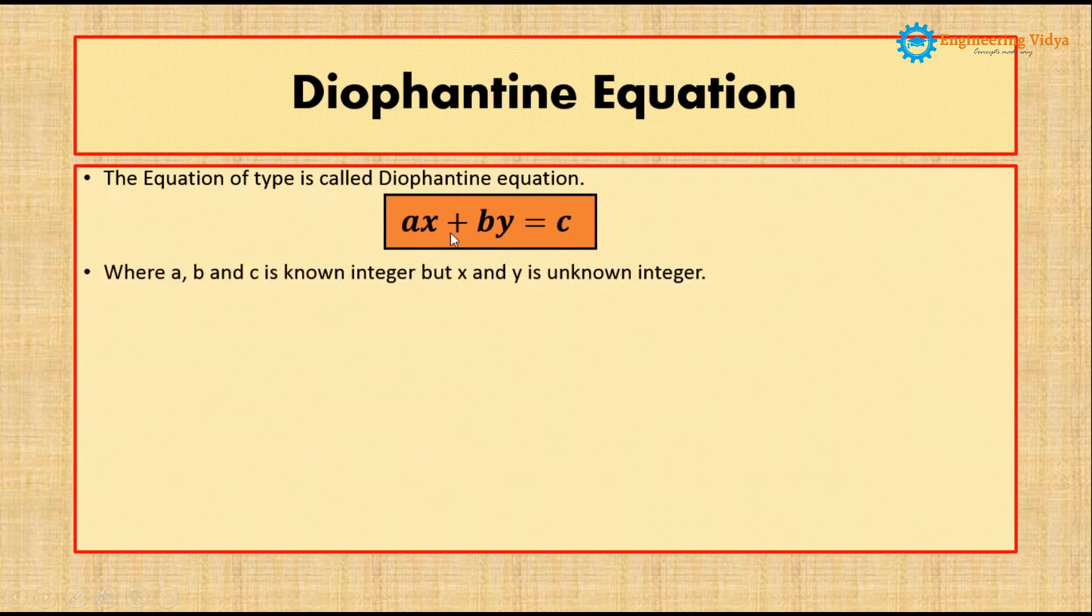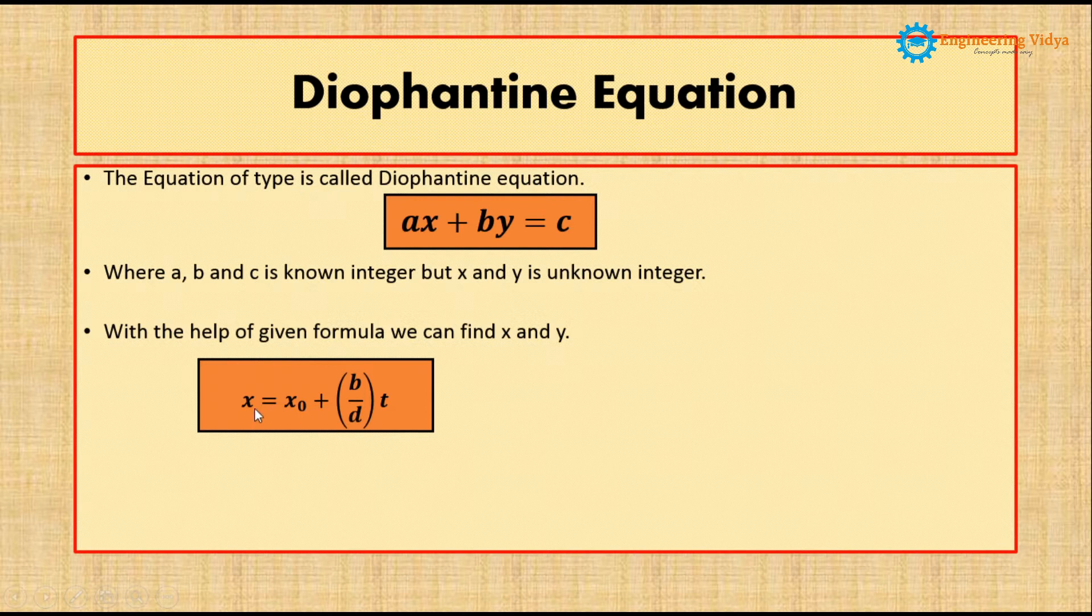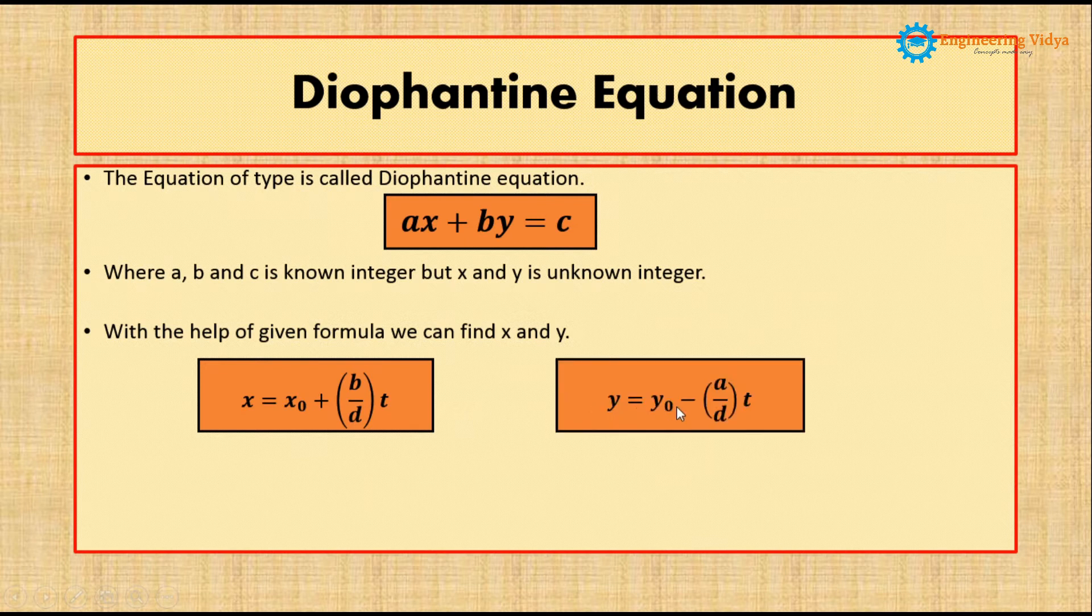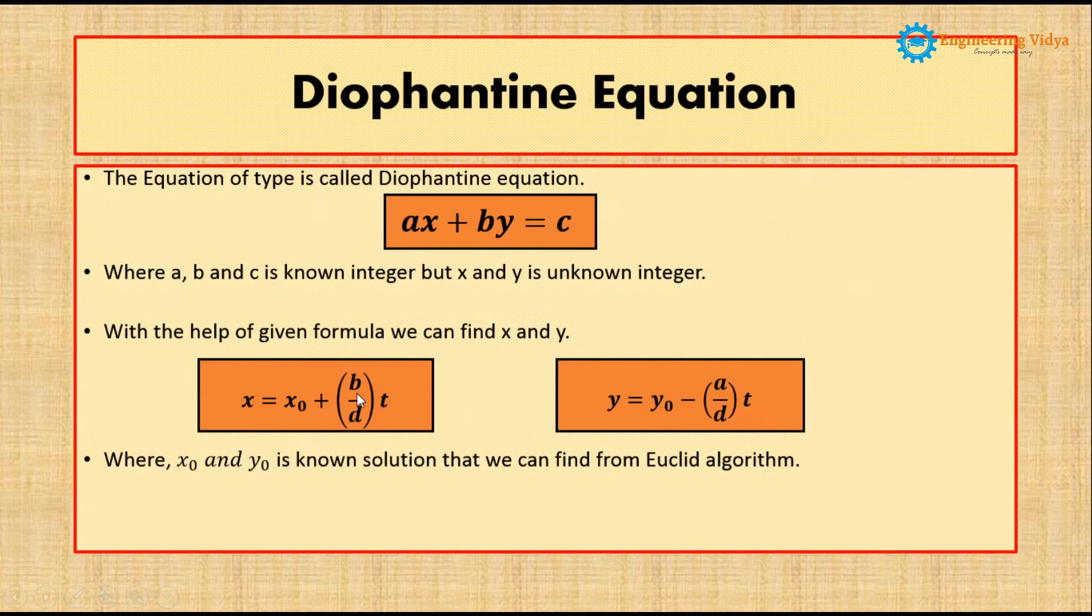In this type of problem, we have to estimate x and y where a, b, and c are given. To calculate x and y, we use the formulas: x = x₀ + (b/d)t and y = y₀ - (a/d)t, where x₀ and y₀ are calculated from the Euclidean algorithm.